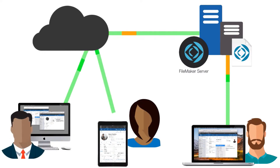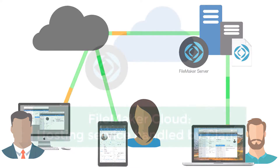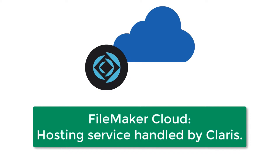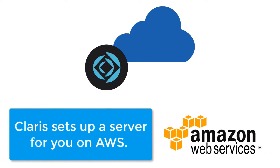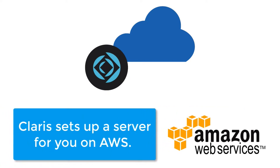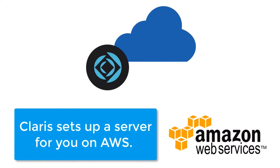FileMaker Server works on your company's Mac or Windows servers. There's also a separate product and service called FileMaker Cloud, which is very similar to FileMaker Server, except when you purchase this service, Claris Corporation handles all the setup of the software and hardware for you within an Amazon data center — so you don't have to do any of the hard work yourself.